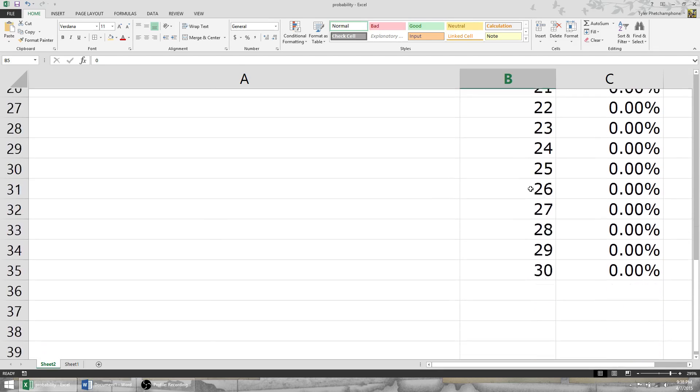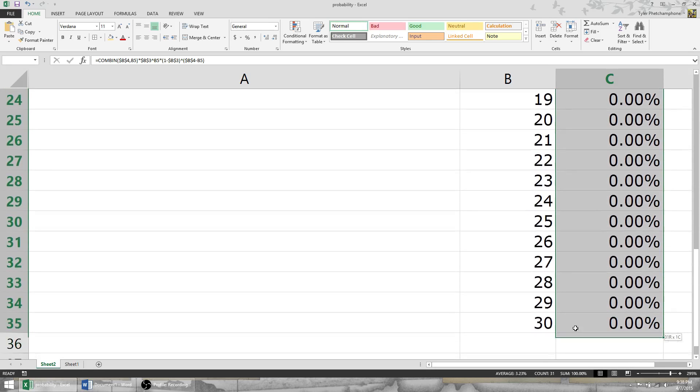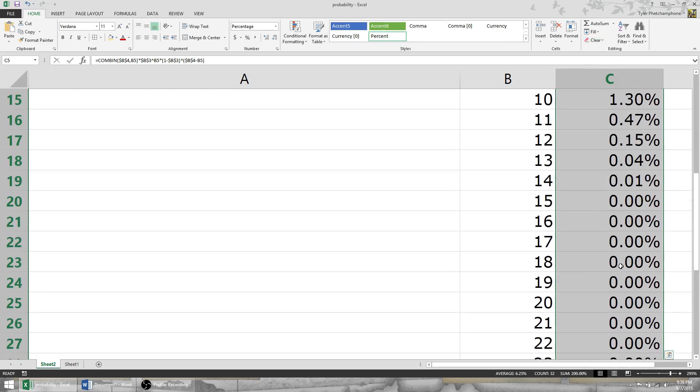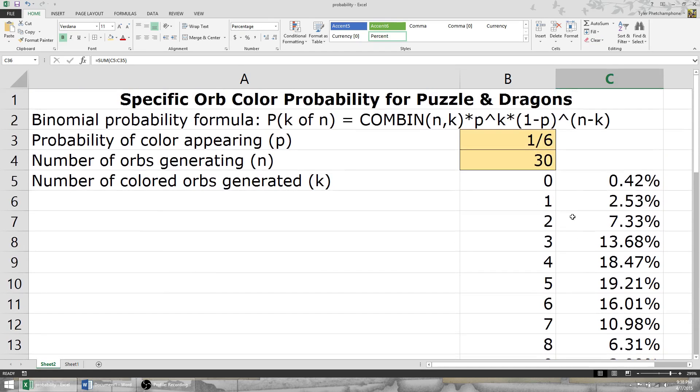Over here, I have the numbers listed from zero to 30. If you add all these numbers together, it equals 100%. So there's a 100% chance of your yellow orb generating from zero to 30. Makes sense, right?